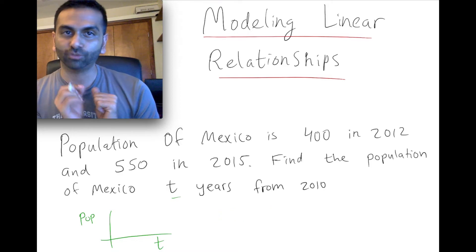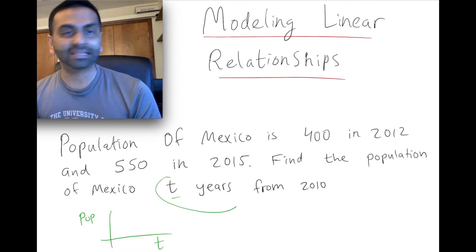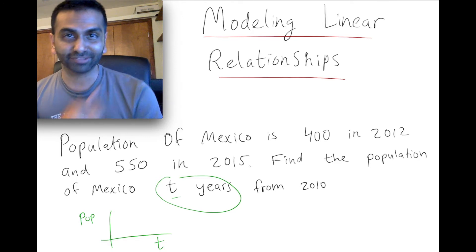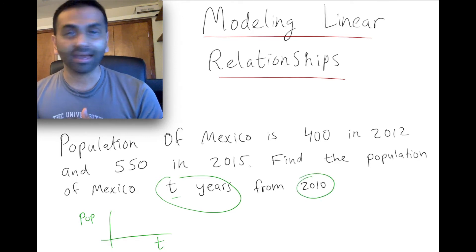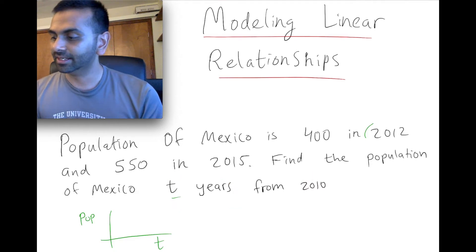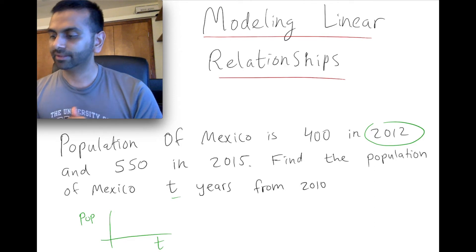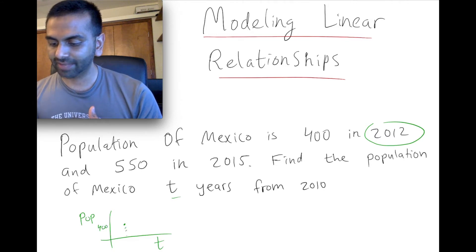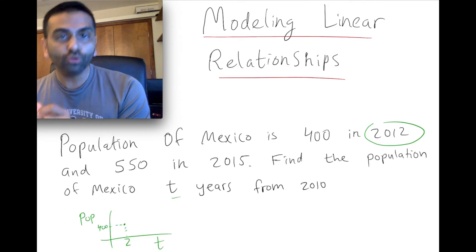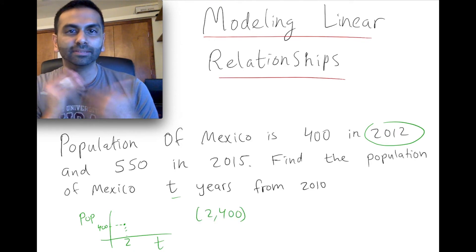So if anything, it'd be flipped. But further, it's not actually 2012, because let's think about what our X variable is. Our X variable isn't years since the beginning of time or years since the year of 0 AD. It's years since 2010. So since it's years since 2010, 2012 is actually just T equals 2. So this point, the fact that the population is 400 in 2010 is actually the point 2 comma 400. So 2 comma 400 is really the point.